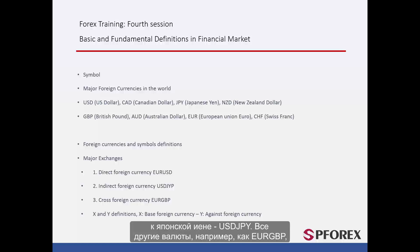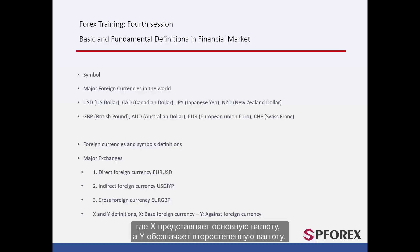All other currencies, like EUR GBP, are referred to as cross currencies, and are usually read as X divided by Y, where X represents the main currency while Y specifies the opposing currency.